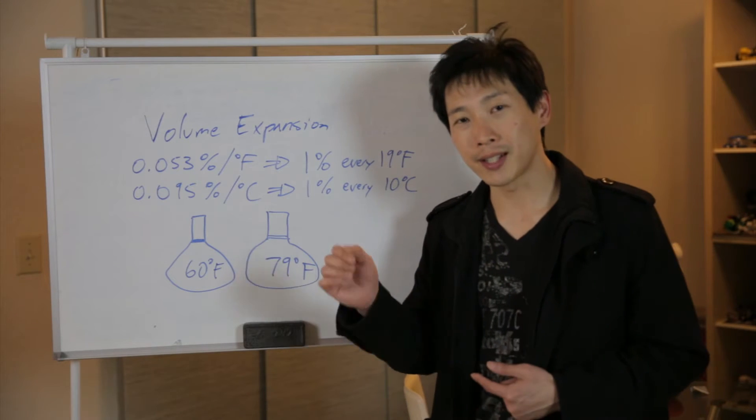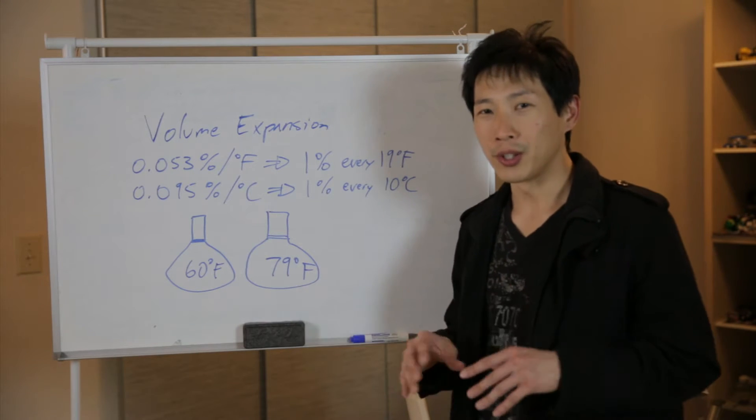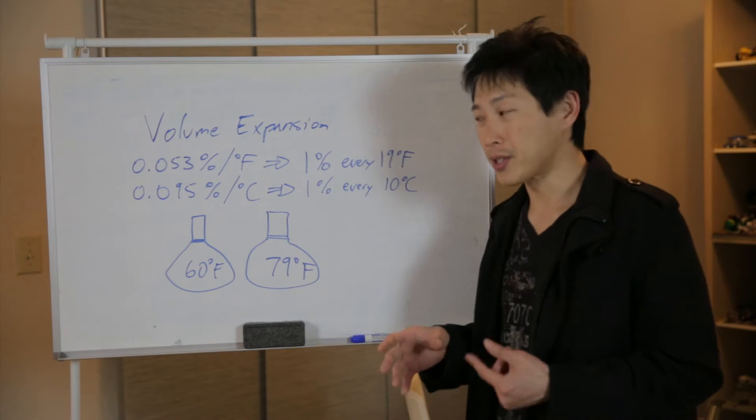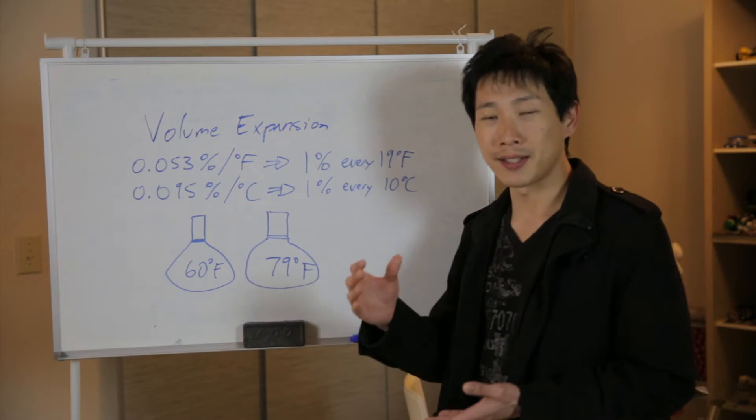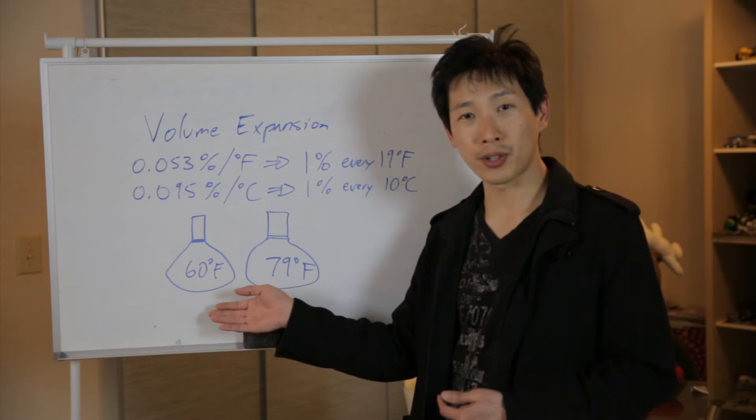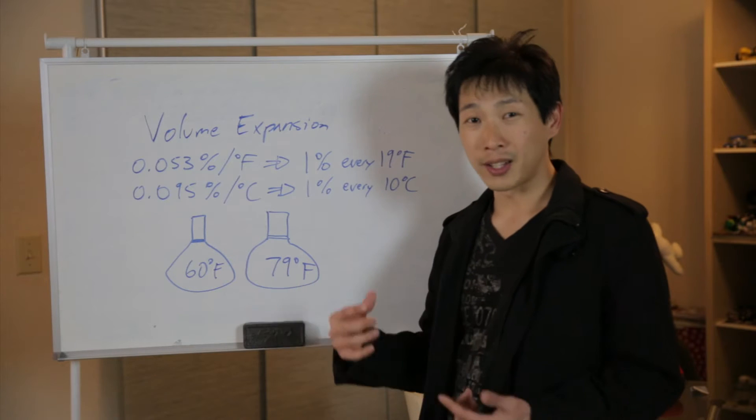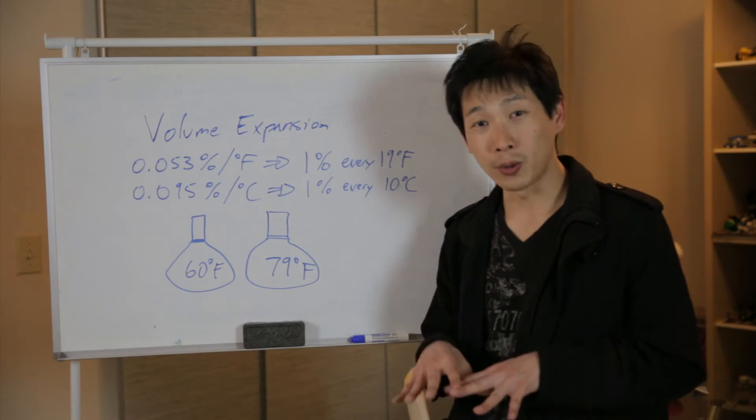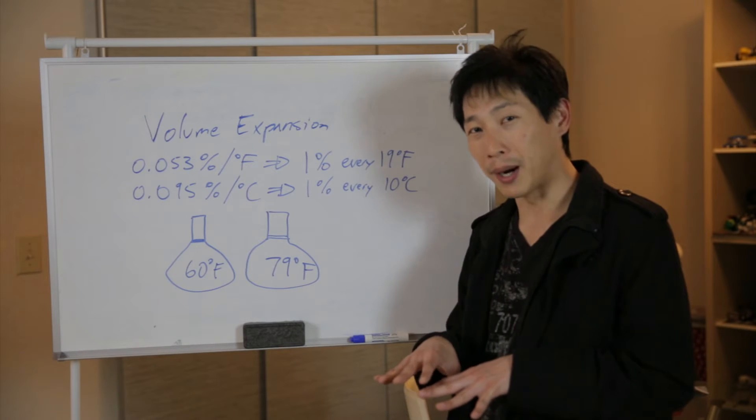There's this paper, I'll link it down in the video description below. You don't really need to read it or anything, but it's there if you need it for reference. Basically what it says is that places like Canada where it's generally on average much cooler, they actually use temperature compensated pumps so that they won't actually lose money. However, in the United States, they actually don't have temperature compensated pumps.